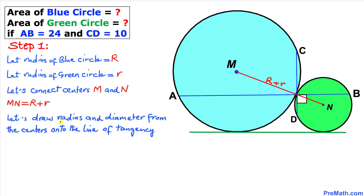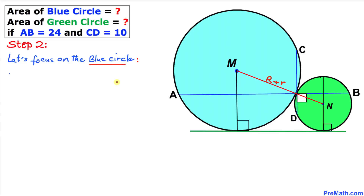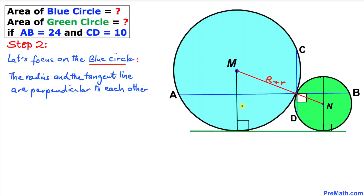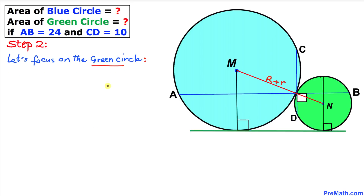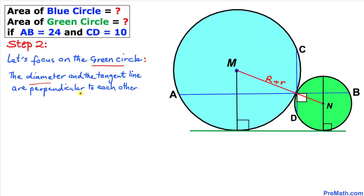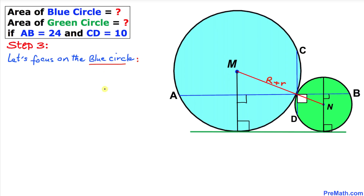Now we are going to draw the radius from the center onto the line of tangency, as well as the diameter onto the line of tangency. For the big blue circle, the radius and the tangent line are perpendicular to each other. According to the tangent-to-a-circle theorem, the angle between a tangent and a radius is always 90 degrees. For the smaller green circle, the diameter and the line of tangency are also perpendicular to each other.